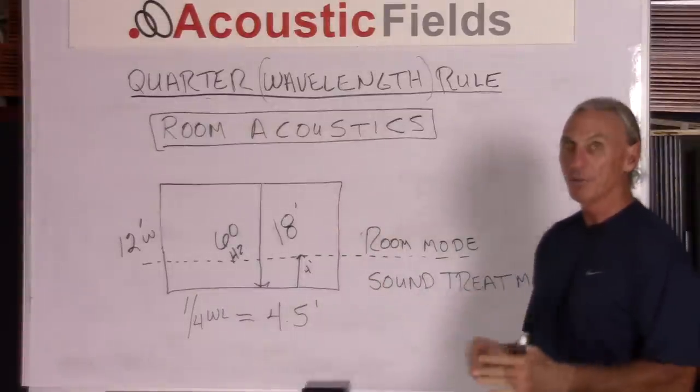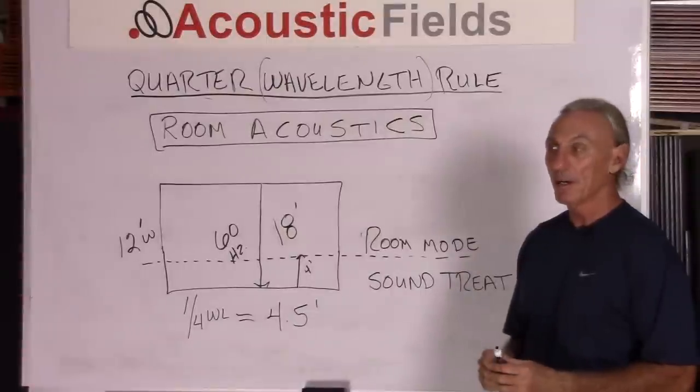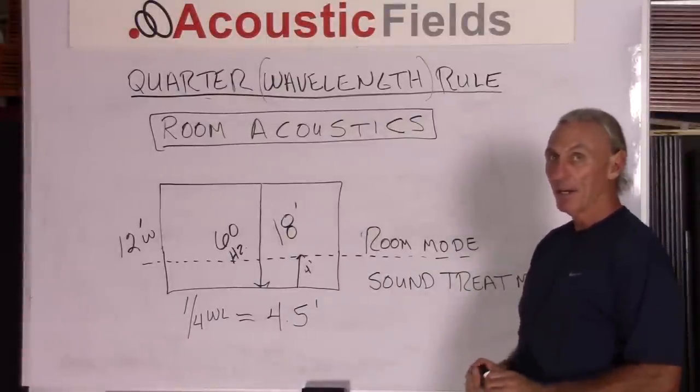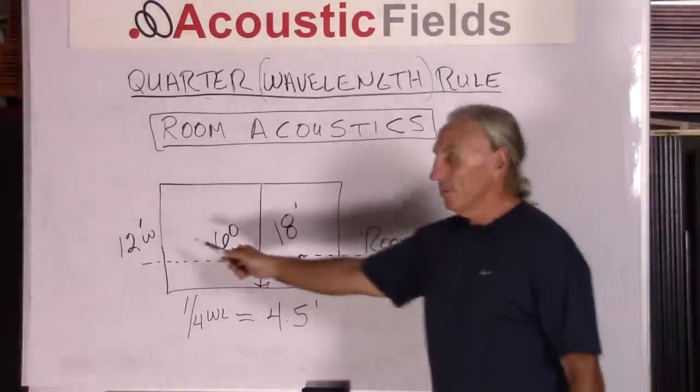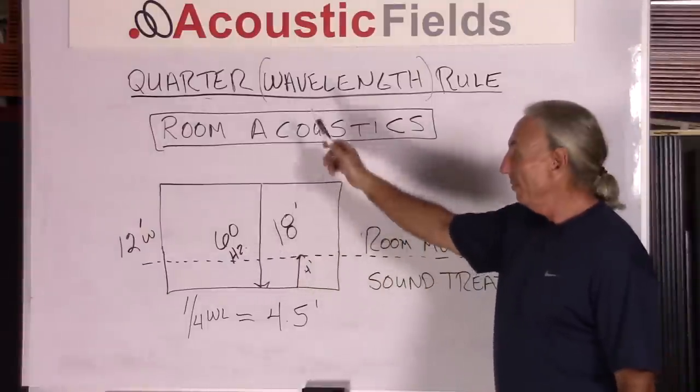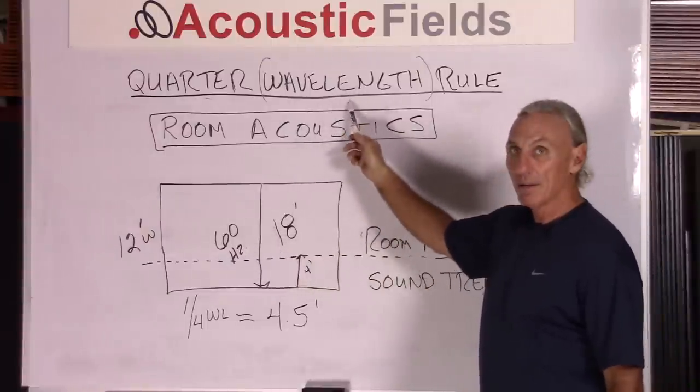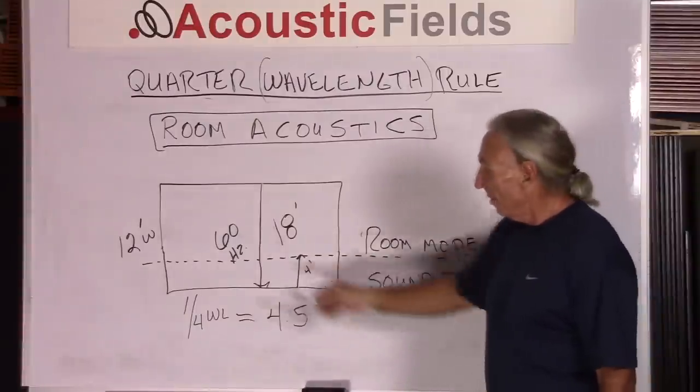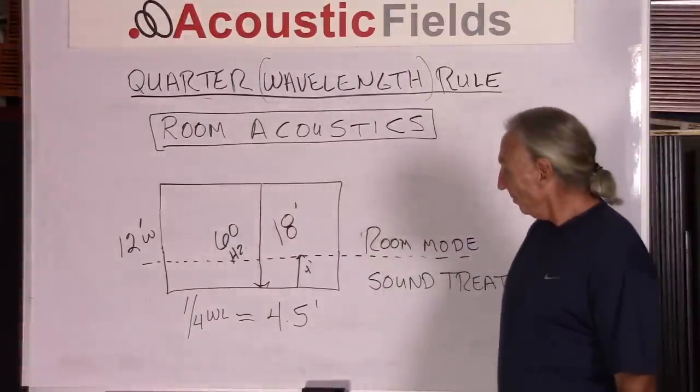This will help us, I think, through illustration and example, get some baseline understanding of quarter wavelength. So if we have a room that's 12 foot wide, we have a 60 cycle wave, and we already determined the length of that wave was 18 feet. Well, our room is 12 foot.